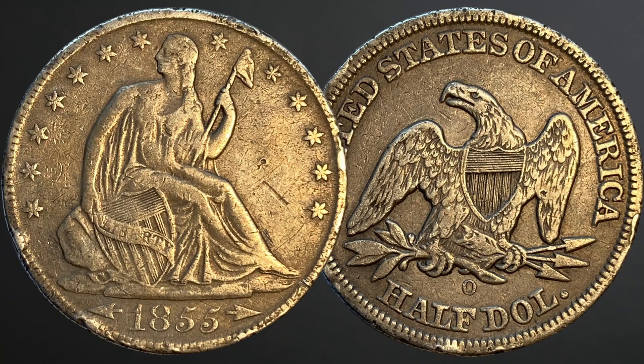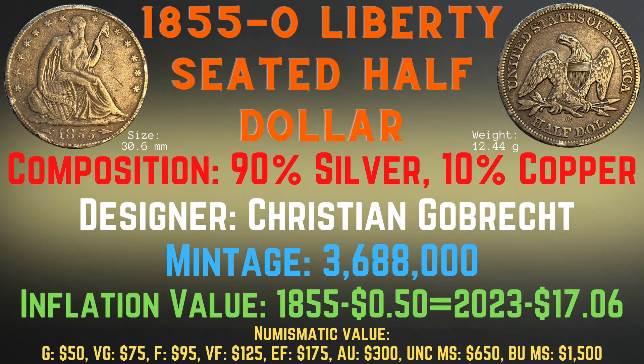Now let's take a look at the 1855 New Orleans Liberty Seated half dollar. It has a size of 30.6 millimeters, a weight of 12.44 grams, a composition of 90% silver and 10% copper, and the designer was Christian Gobrecht. The mintage is 3,688,000 and this coin has an inflation value of $17.06 for the year 1855. Numismatic values range from $50 in good condition up to $1,500 in brilliant uncirculated mint state condition.